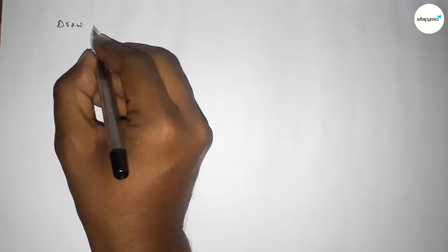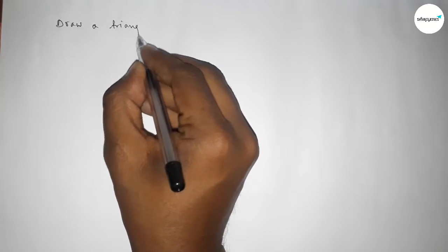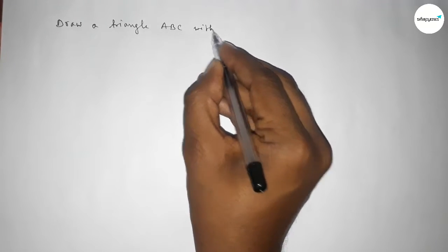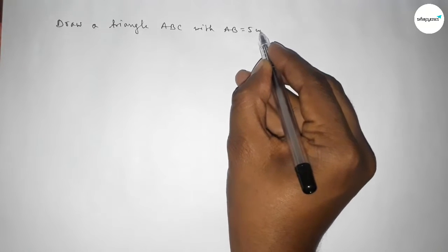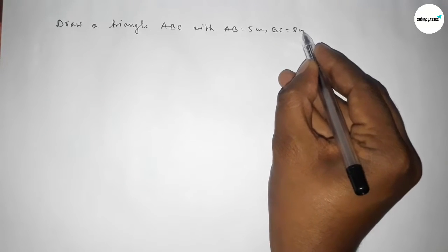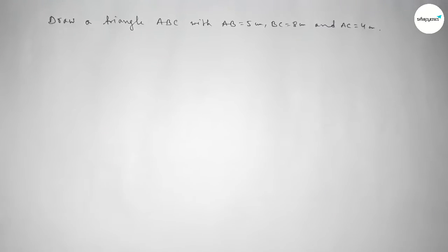Hi everyone, welcome to SISR Classes. Today in this video we have to draw a triangle ABC with AB equal to 5 centimeter, BC equal to 8 centimeter, and AC equal to 4 centimeter. So let's start the video.